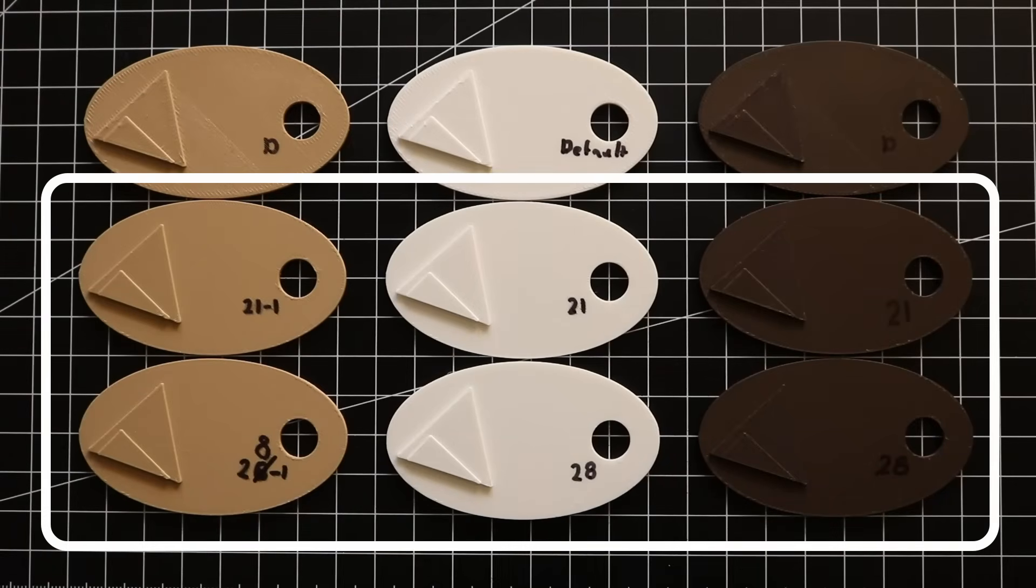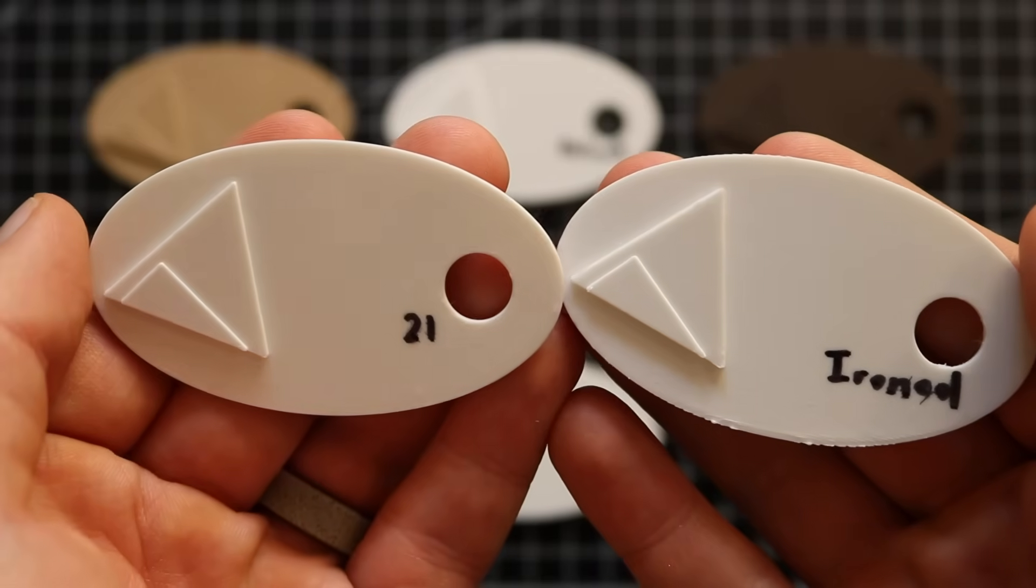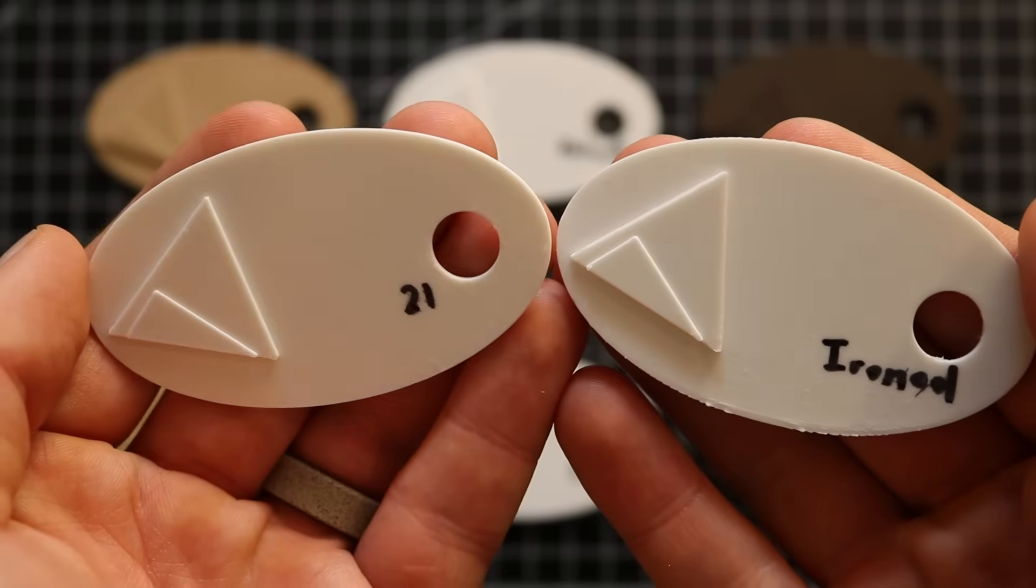These pieces are not ironed, but I found a set of parameters that create surfaces that almost match the ironed look for roughly 34% less print time.